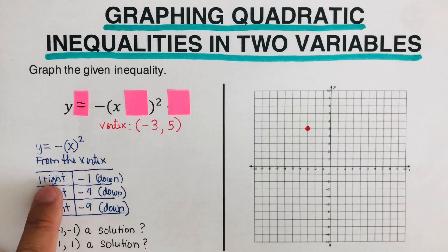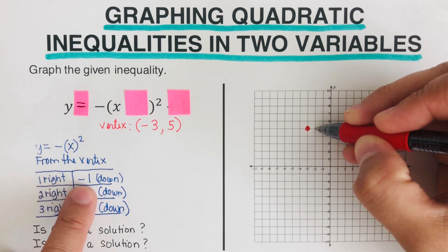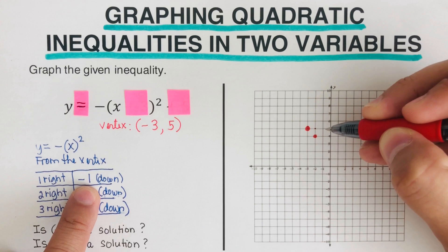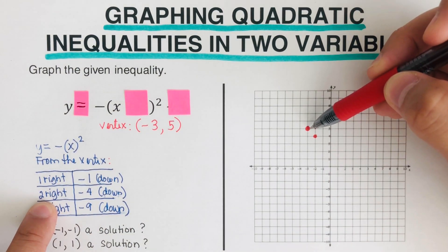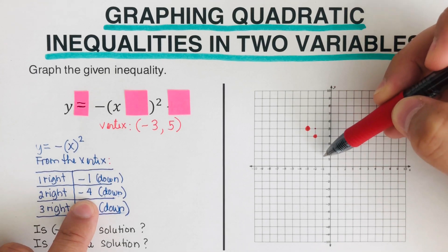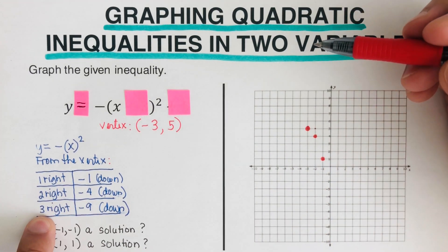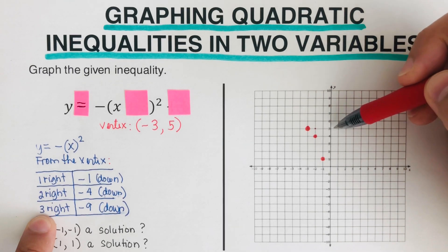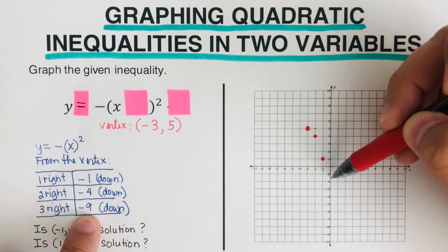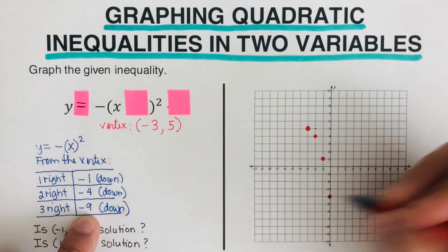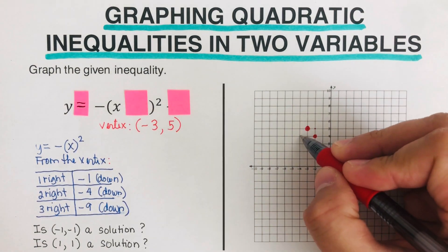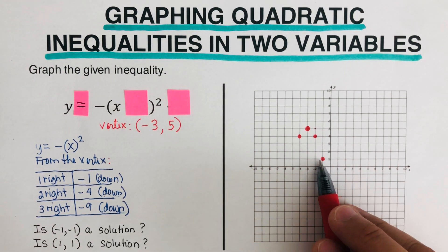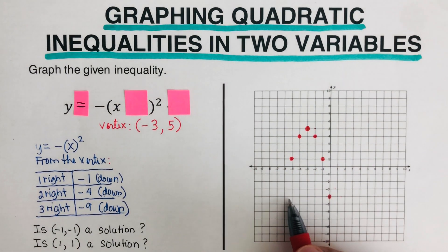To sketch the graph: from the vertex, go 1 right then 1 down for the second dot. Then from the vertex go 2 right and 4 down for the next dot. Then go 3 right and 9 down for the next dot. Since this is a parabola, we mirror these dots across the axis of symmetry to get the points on the other side.